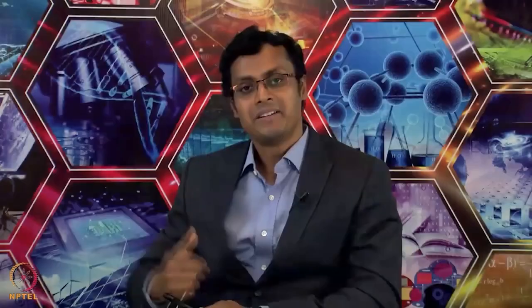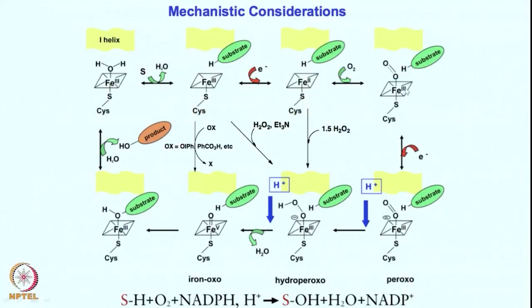You must be noticing the similarities with copper chemistry. If it was copper, it was copper I reacting with oxygen → copper II superoxo → reacting with one electron → copper II peroxo → proton → copper II hydroperoxo, and so on. So iron chemistry and copper chemistry parallel each other, and more importantly all of them are capable of doing chemistry. Not all of them will be equally reactive — these comparisons are very sensitive and difficult to make. But overall, iron III going reduced to iron II and reacting with oxygen gives the substrate hydroxylation product.